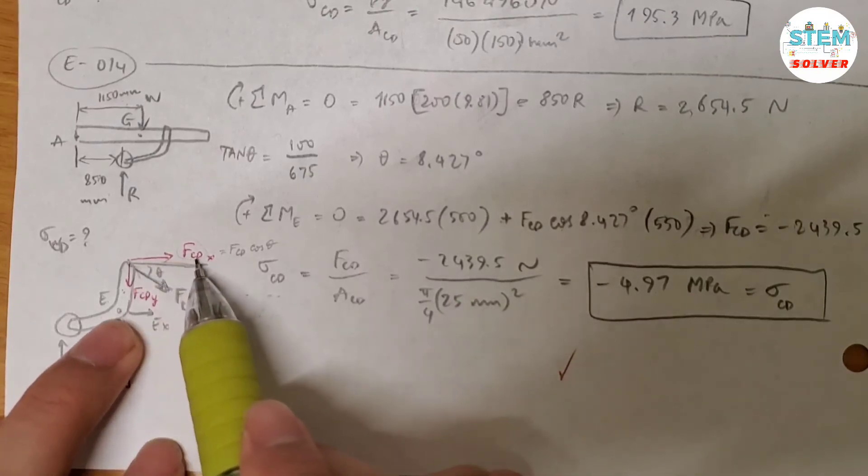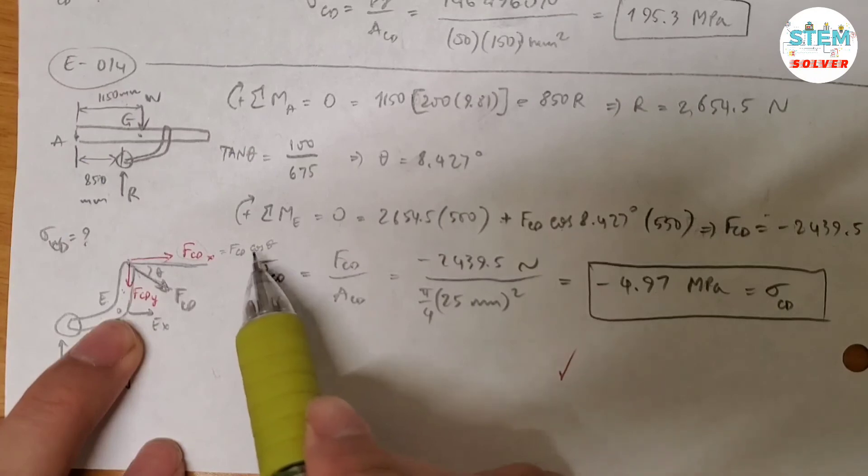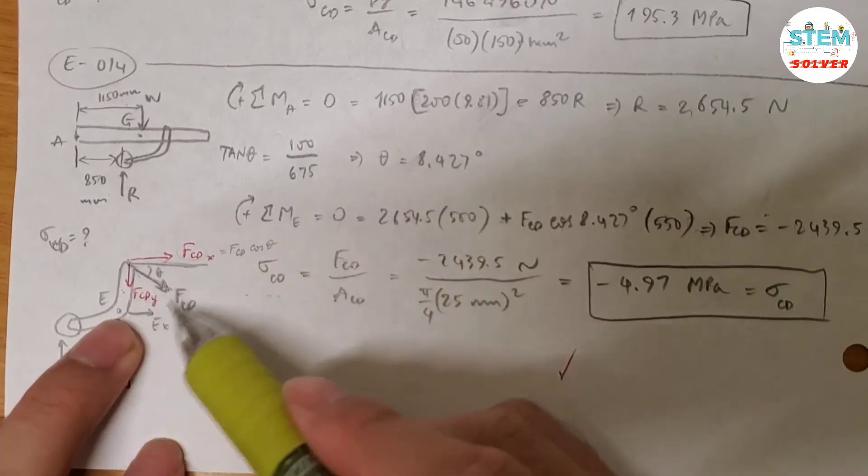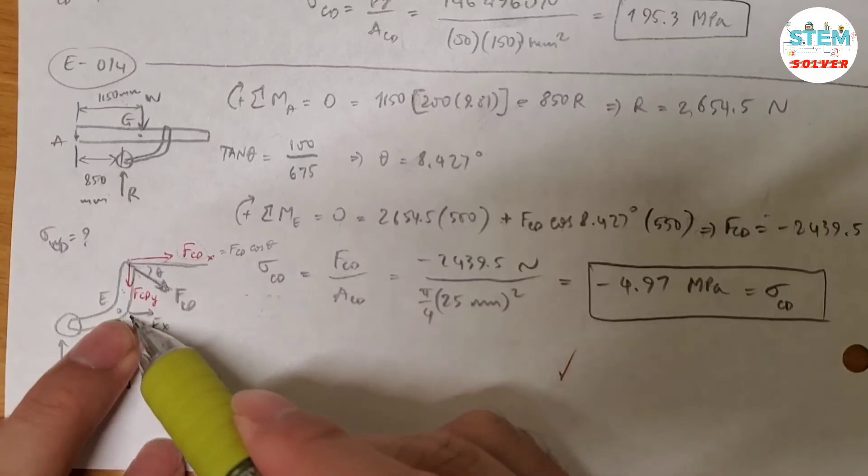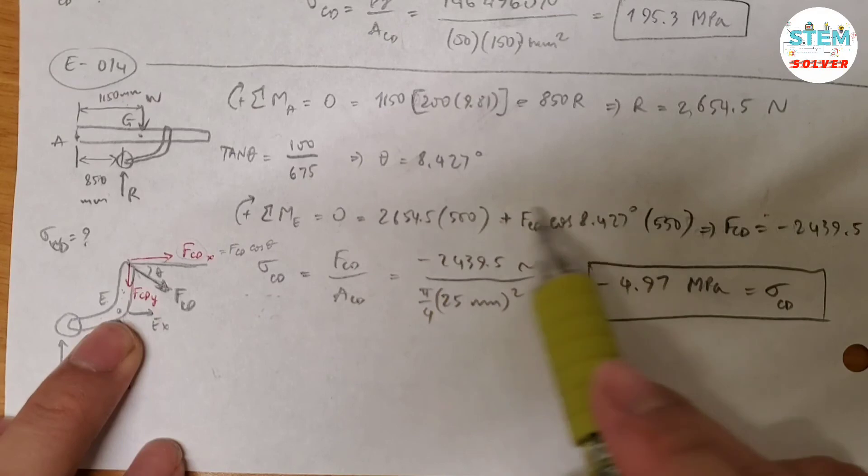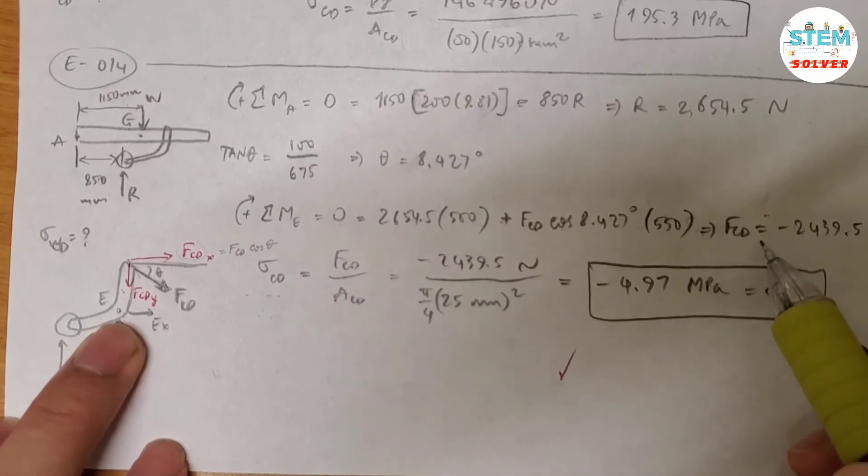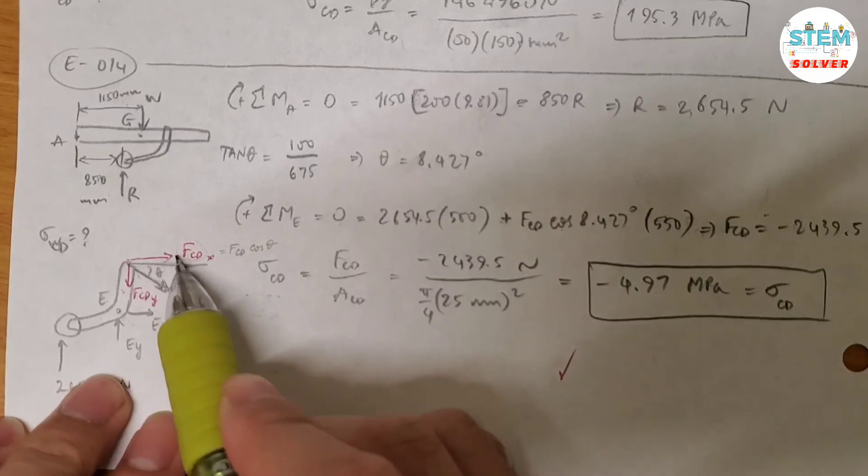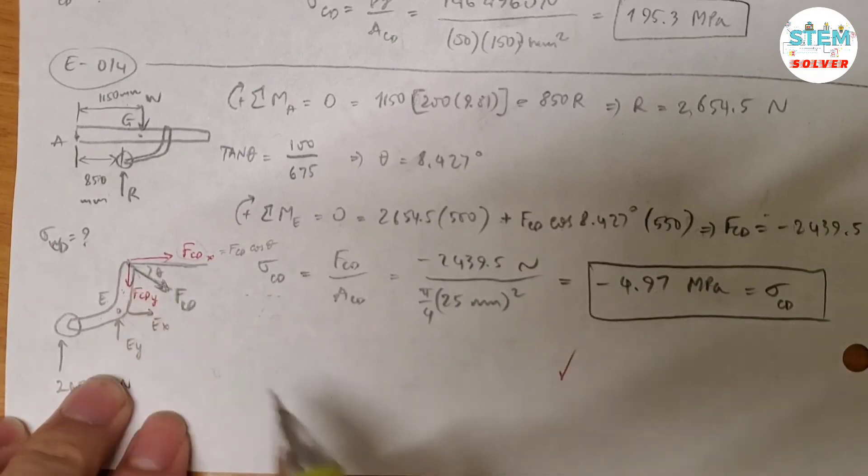So the moment of this one is equal to FCD times cosine theta. And theta is 8.427 which is what we just found. And times the distance from this force to E, which is 550. And then set this expression equal to 0 because it's in equilibrium. Then solve for the force CD. I got FCD equals negative 2439.5N. That means that this force should have been pointing to the left.